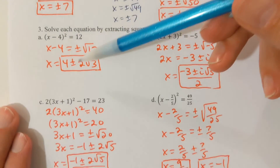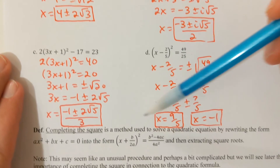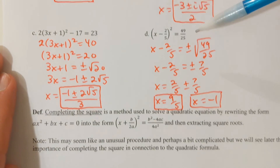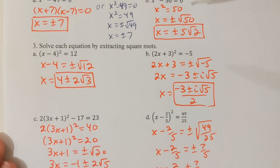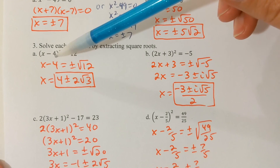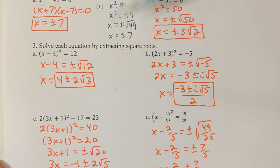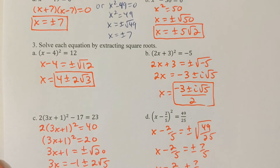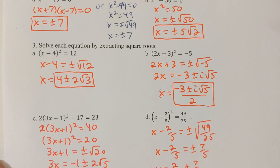We talked about the square root property in the last video. You want to use the square root property basically in a situation where you've got an expression that is squared on one side, and you're all set up to take the square root of both sides to get rid of that power of 2.